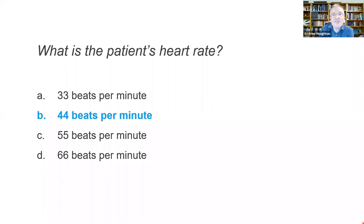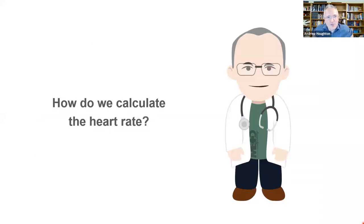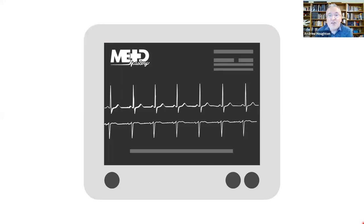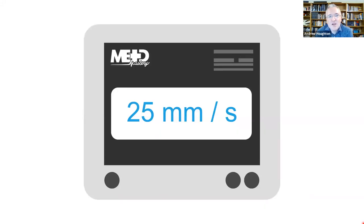Let's talk about how we calculate heart rate. The basis of heart rate calculation is knowing that ECGs are usually recorded at a standard rate of 25 millimeters per second. What that means is that the paper going through the ECG machine moves at 25 millimeters every second. That's crucial for working out the duration of intervals on the ECG and for working out a patient's heart rate.